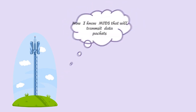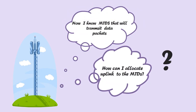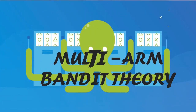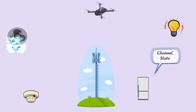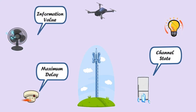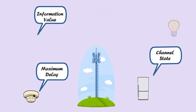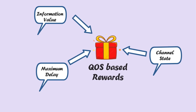Now the base station knows the devices that will transmit data in the future, but it has a new problem: how to allocate the uplink resources to MTDs. For this, it will use multi-arm bandits theory, a well-known reinforcement learning technique. MTDs in an IoT network have some quality of service requirements to be satisfied — they are channel state, maximum delay, and information value. Based on those QoS parameters, the rewards for each MTD will be calculated.